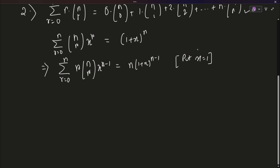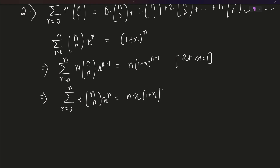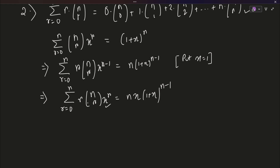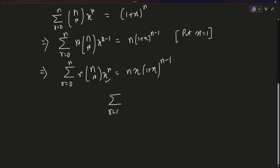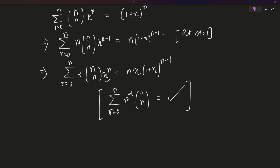Now you might want r² as well. What do we do? We need another r. So multiply x on both sides, which gives nCr · x^r again on the left. Then differentiate both sides again with respect to x — this introduces another factor of r, resulting in r² inside the summation. Then put x=1 to get the answer. This way I can find any power r^α where α is a natural number, multiplied by nCr. It might take some time but it is definitely possible and we have a complete algorithm to do so.